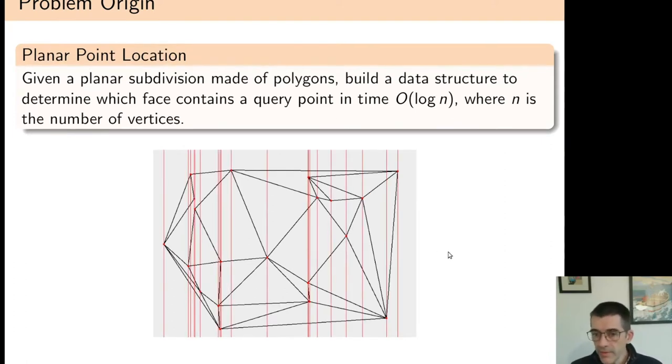To do that, you can split the plane into vertical slabs using lines passing through the vertices, then sort these slabs from left to right, and within each slab sort the edges from top to bottom. Given a query point, you can binary search for the slab, then within the slab binary search for the two edges, and answer in logarithmic time.